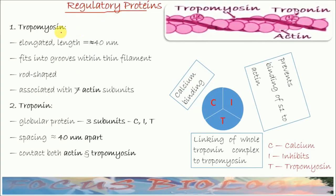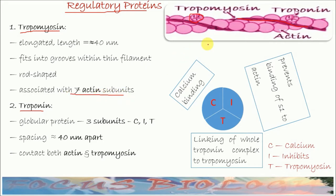There are two regulatory proteins: one is called tropomyosin and another is called troponin. Tropomyosin is a rod-like protein — you can see it here as a rod-like structure in the thin filament. Tropomyosin expands or covers about seven actin subunits, meaning this tropomyosin is associated with seven different actin subunits.